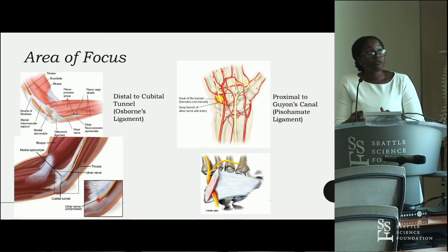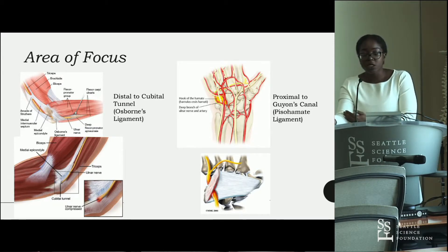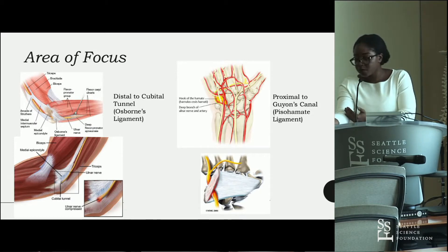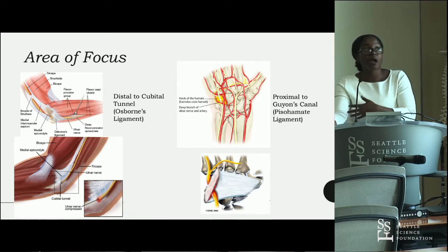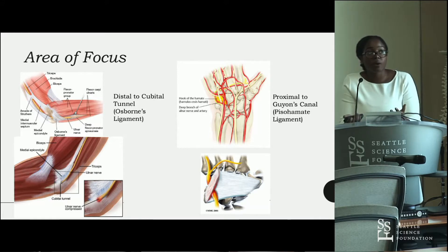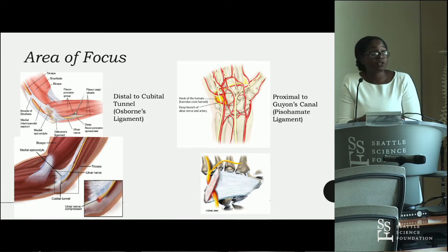Our area of focus has Osborne's ligament — the roof of the cubital tunnel — as our proximal boundary, and the pisohamate ligament — the proximal boundary of Guyon's Canal — as our distal boundary. This focus is chosen because cubital tunnel syndrome and Guyon's Canal syndrome have been very well researched; we want to focus on more atypical presentations of ulnar nerve entrapment.